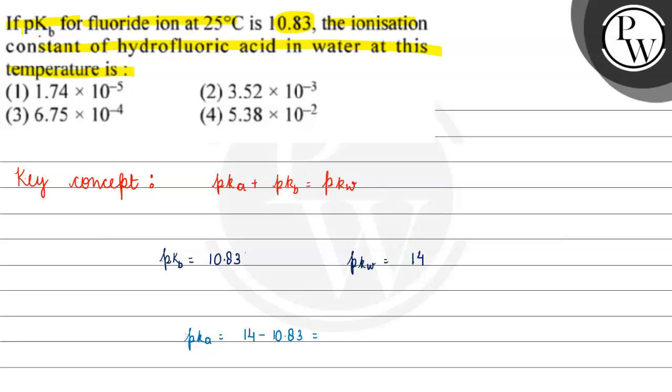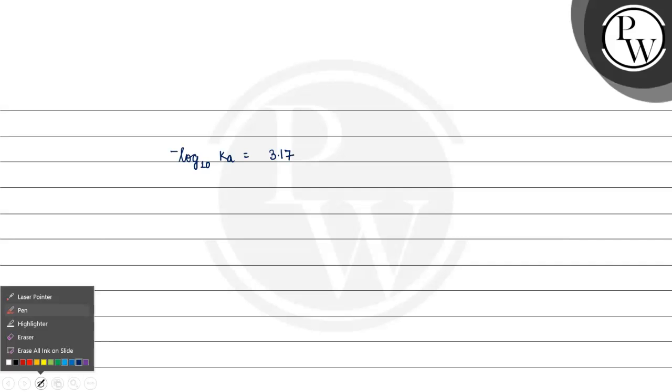It will come 3.17. pKa will come minus log with the base 10. Ka will be equals to 3.17. For finding Ka, pKa will come, Ka will be equals to 10 raised to the power minus 3.17.